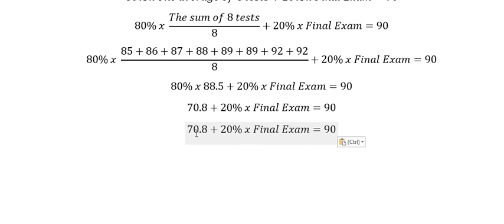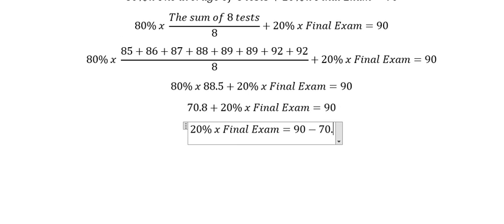So we put this number, go to the right, and you got about negative 70.8, and this one you will got about 19.2.